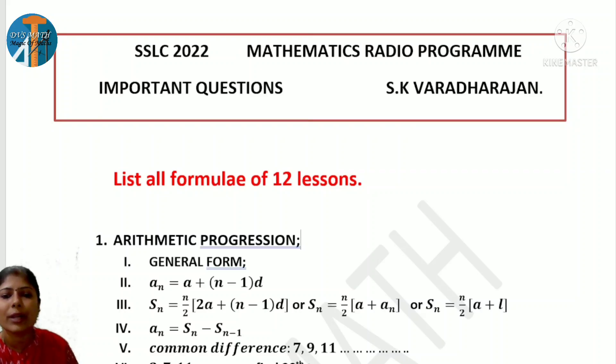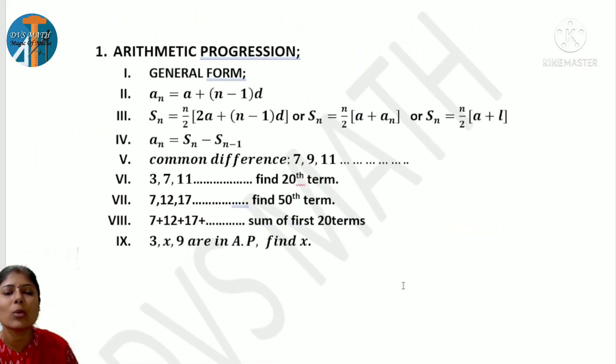Now let me tell you what they are saying. First, they are saying list all formulae of 12 lessons. There are 12 lessons, and except construction, all lessons have formulae. Even in construction, you can write the angle between tangents formula.